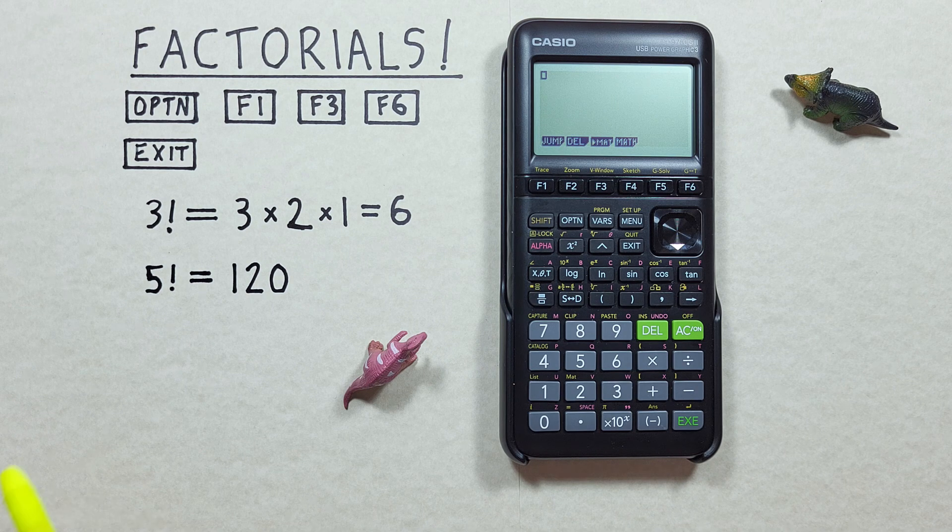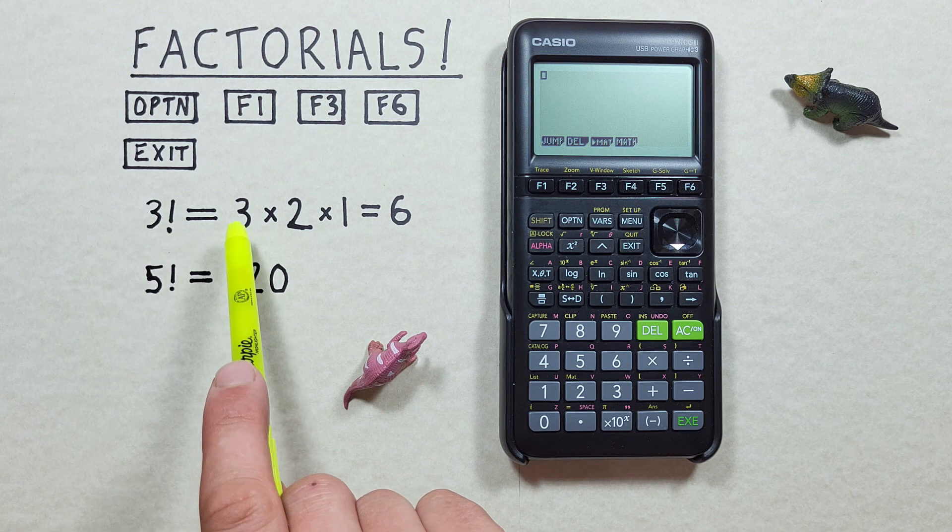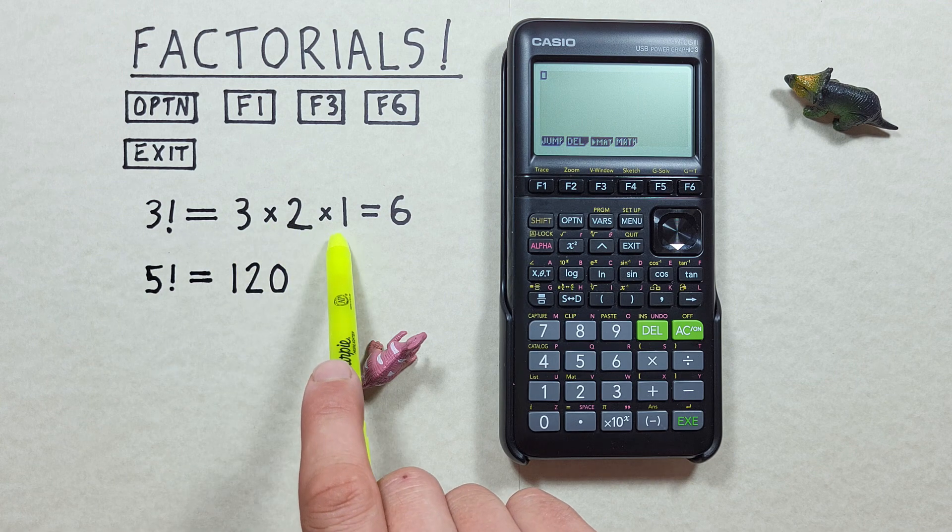We know a factorial like 3 factorial is the number and all whole integers below it multiply together. So 3 factorial is 3 times 2 times 1.